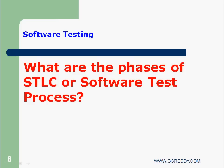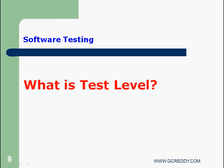What are the phases of STLC in Software Test Process? Phases of STLC or Software Test Process: Test Planning, Test Design, Test Execution, Evaluating Exit Criteria, and Test Closure.